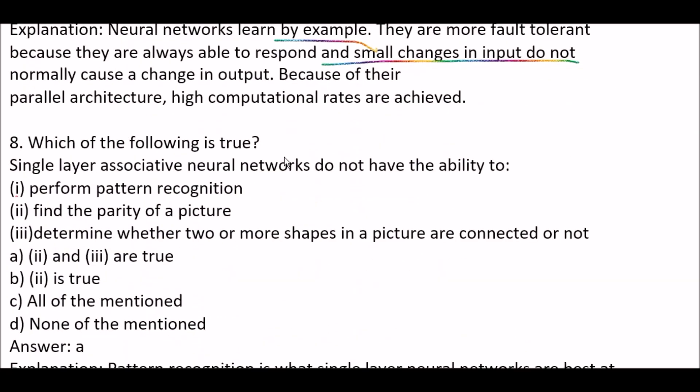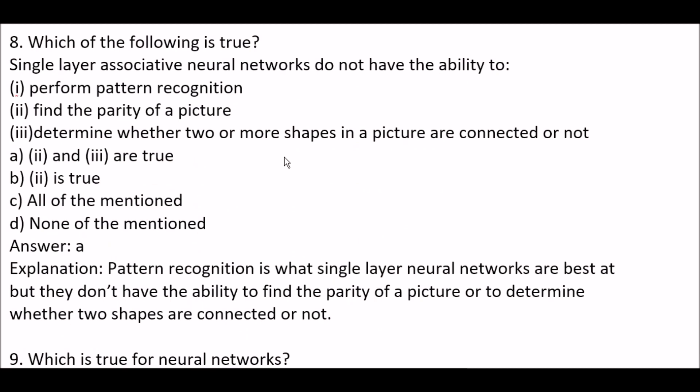Next question: which of the following is true? Single layer associative neural networks do not have the ability to — Statement 1: perform pattern recognition. Statement 2: find the parity of a picture. Statement 3: determine whether two or more shapes in a picture are connected or not. Option A: second and third are true. Option B: second is true. Option C: all of the mentioned. Option D: none of the mentioned. The right answer is option A — second and third are true, because pattern recognition is what single layer neural networks are best at, but they don't have the ability to find the parity of a picture or to determine whether two shapes are connected.